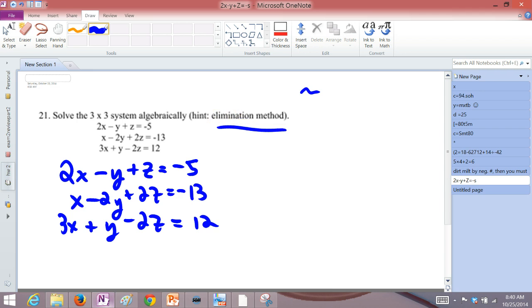So what that is is where you try to get one of the variables to cancel. If we put these two equations together, we can get the x's to cancel out. How we do that is by taking the second equation and multiplying it by negative 2. So keep the first equation, don't do anything to it.